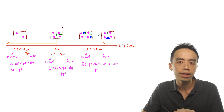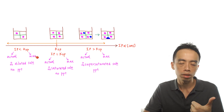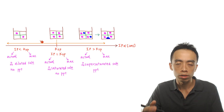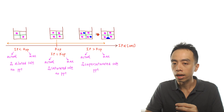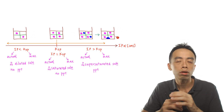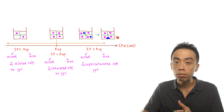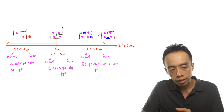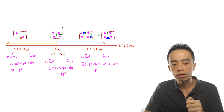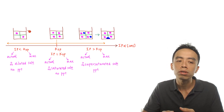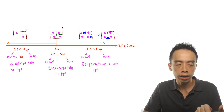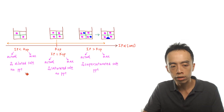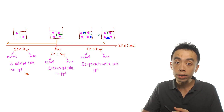On the left-hand side, IP less than Ksp means actual is less than maximum. If the maximum is four slots and I only give the solution two ions, everything can dissolve and there is still space available to dissolve more salt. So this solution is dilute — it is holding fewer ions than it can handle. Of course, if the solution is dilute, there is no precipitation. So IP less than Ksp means no precipitation.